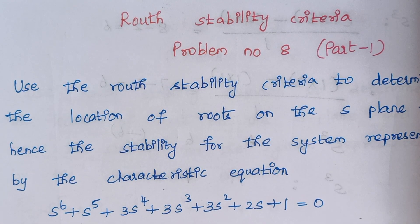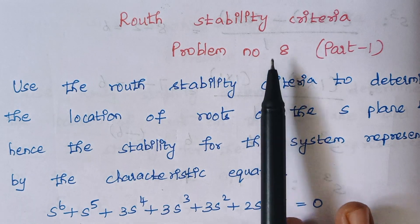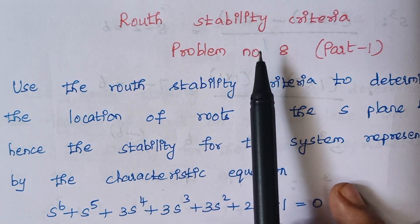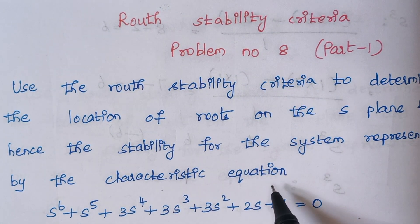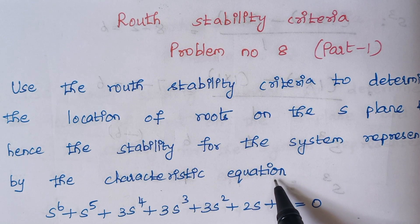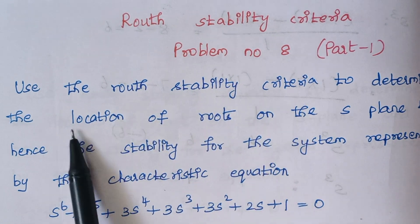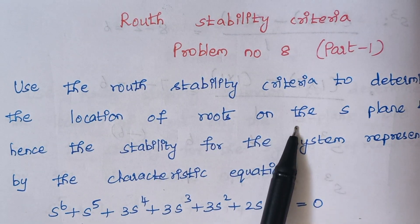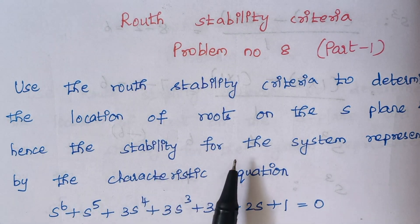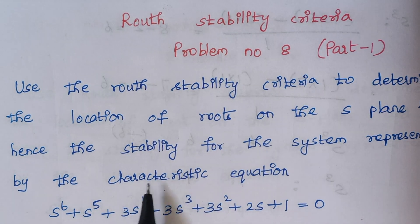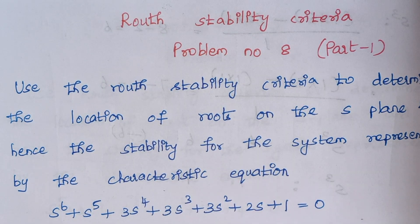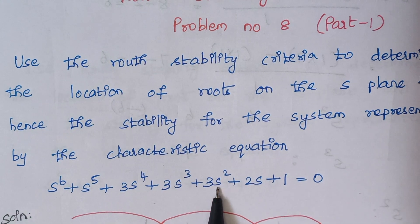Hello viewers, I am Kausalya. Today we are going to solve problem number 8 under the category Routh stability criteria. This problem is quite big so I have divided it into two parts, and now we are going to see part 1. The problem is: use the Routh stability criteria to determine the location of roots on the s-plane and hence the stability for the system represented by the given characteristic equation.